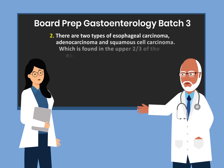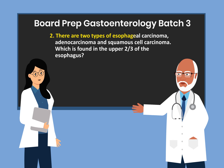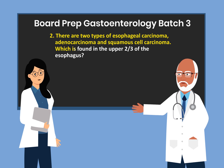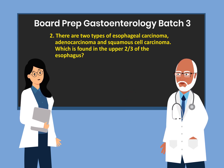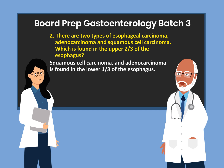Question 2. There are two types of esophageal carcinoma: adenocarcinoma, and squamous cell carcinoma, which is found in the upper two-thirds of the esophagus. Adenocarcinoma is found in the lower one-third of the esophagus.